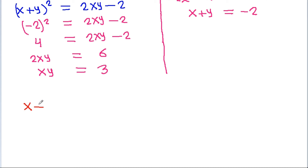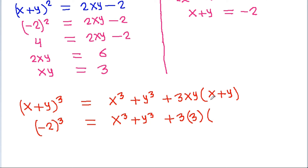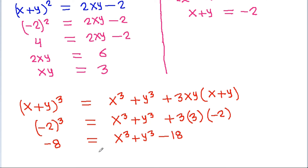Using the identity x cube plus y cube equals (x plus y) cubed minus 3xy times (x plus y): x plus y is minus 2, so (x plus y) cubed is minus 8. And 3 times xy times (x plus y) is 3 times 3 times minus 2, which is minus 18. So x cube plus y cube equals minus 8 minus (minus 18), which equals 18 minus 8, that is 10.